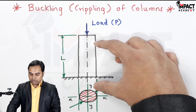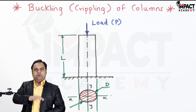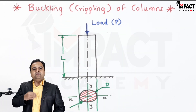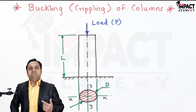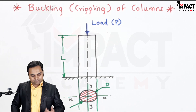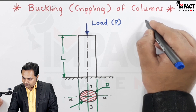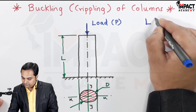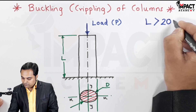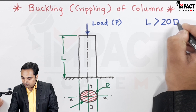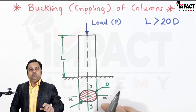Because of this axial load, if the length of the column is short, then under the action of this axial load the column may get compressed — so there would be only compression if the length of the column is short. But if the length of the column is more, the condition is: if the length of the column is greater than 20 times the diameter.